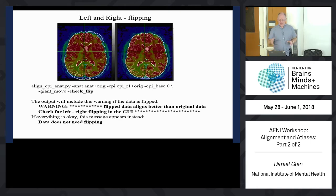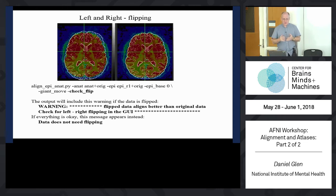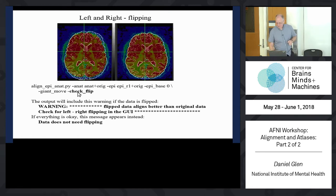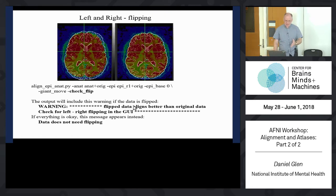Yesterday I went on a little rant about left-right. This is what I was talking about - this is how you can check it using edge displays. One of our users, Brad Buxbaum, found this problem in the Fcon 1000 dataset. We've automated this into @LightningPINAT, so you can check for flipping with just the check_flip option. If the data is flipped, it will give you a warning - if the flipped data aligns better than the original data, that's not good.